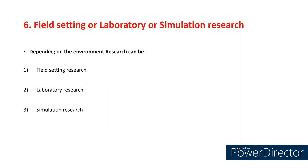Depending on the environment, research can be three types: field-setting research where the research is carried out in a field or a community; laboratory research which is conducted under lab conditions; and simulation research where we replicate or simulate a natural process.